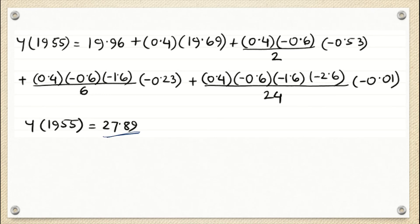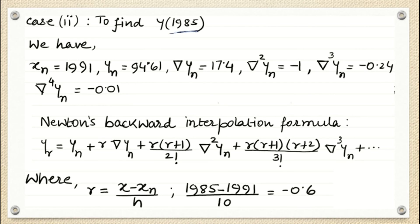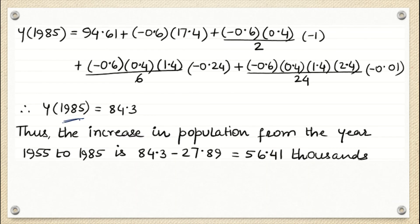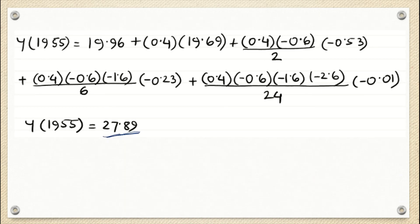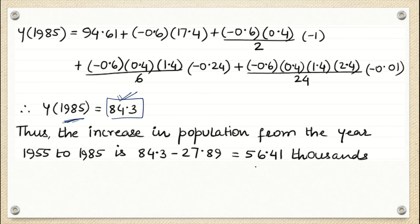For y1985, we apply Newton's backward interpolation formula with the corresponding changes — using xn and the downside triangle notation. We compute r as x minus xn divided by h, substitute all values, and get y1985 equals 84.3. The increase in population from 1955 to 1985 is 84.3 minus 27.89. Don't forget the unit — the values are in thousands, so the answer is in thousands as well.